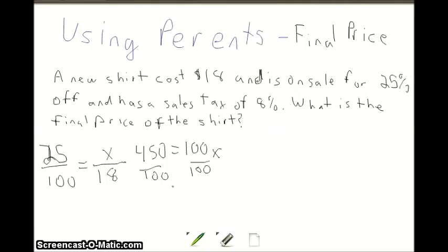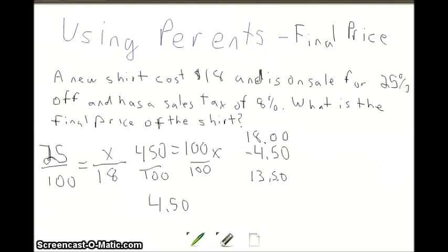That gives us a discount of $4.50. Once we find our discount, we take it away from the original cost to find the sale price. So we do 18 minus 4.50, which gives us $13.50.